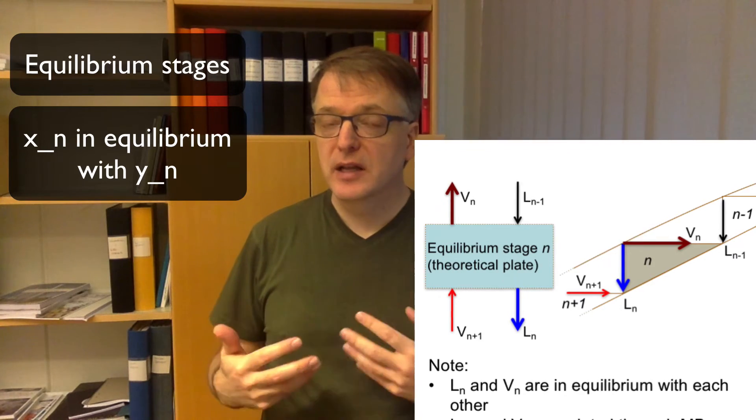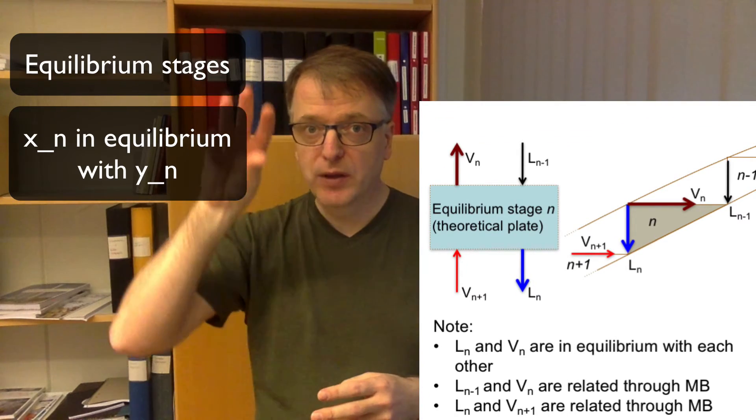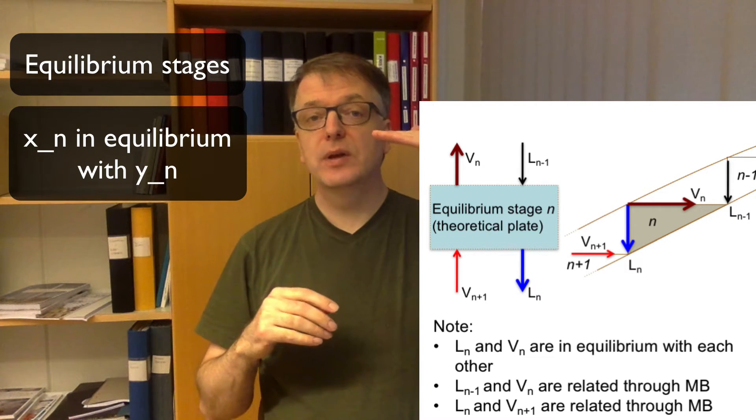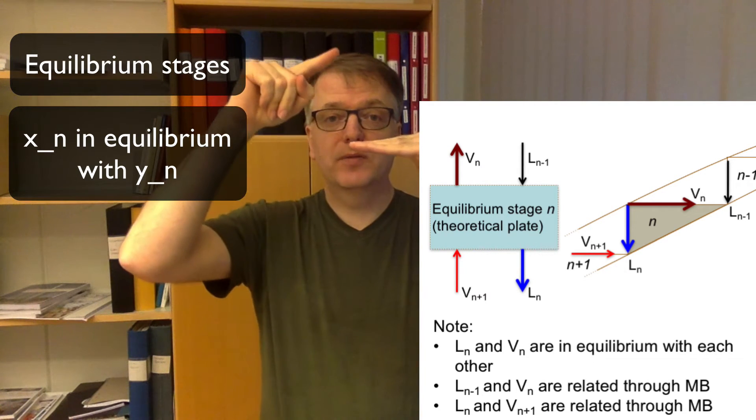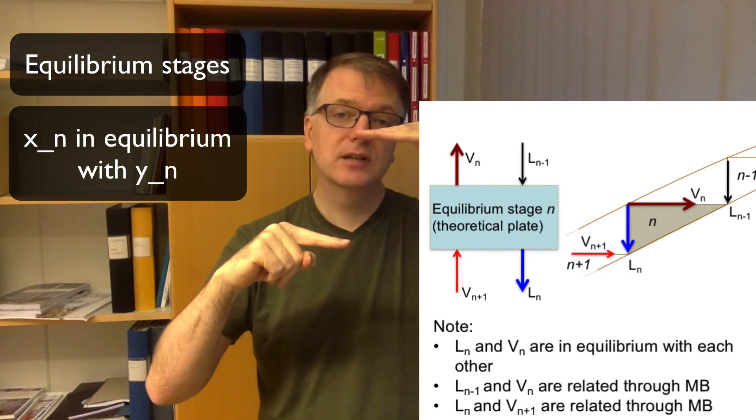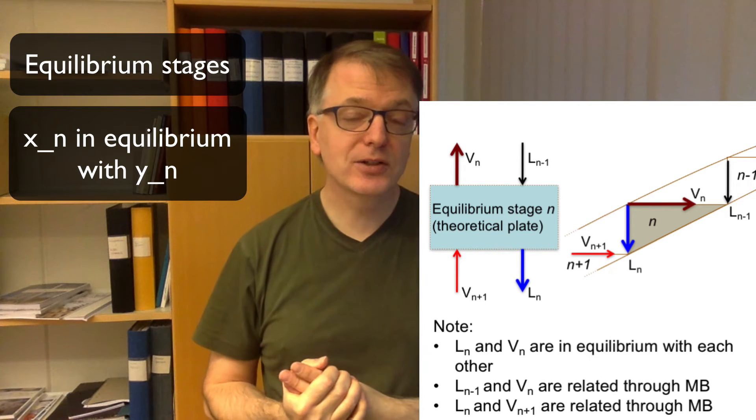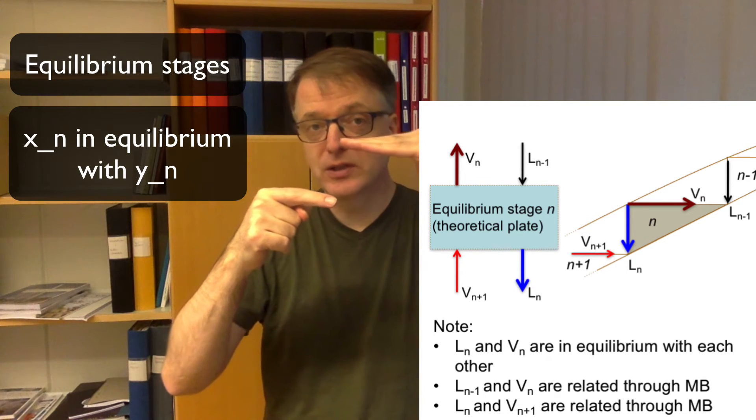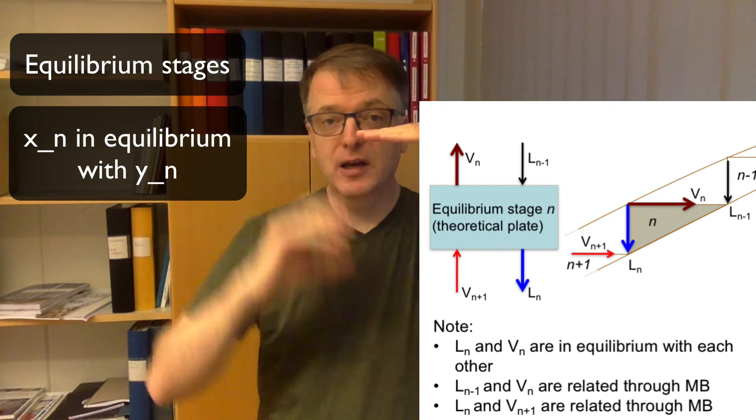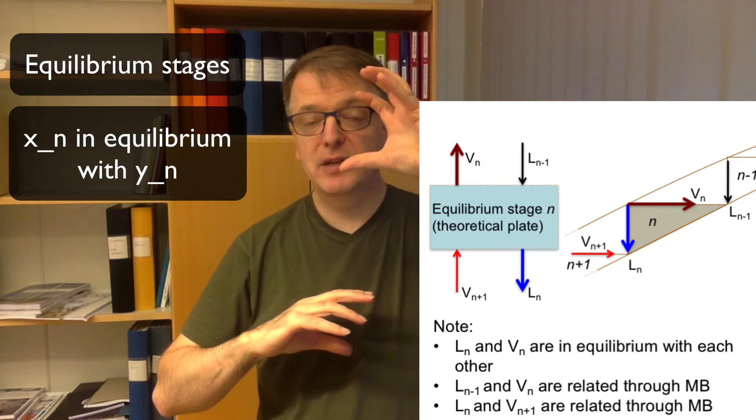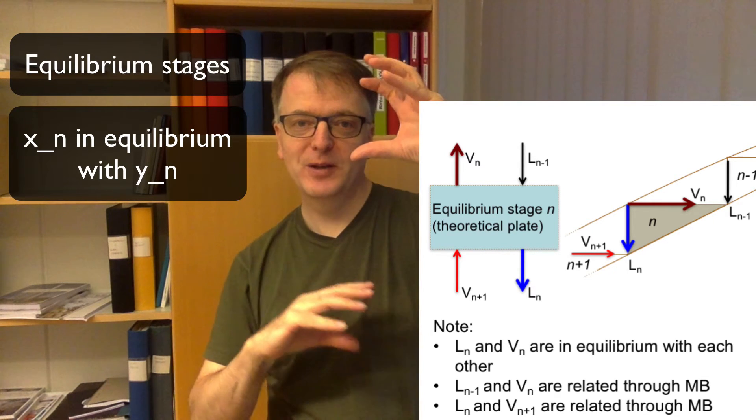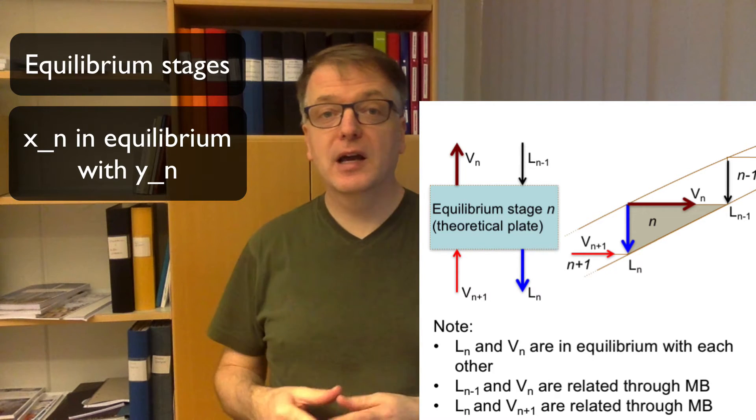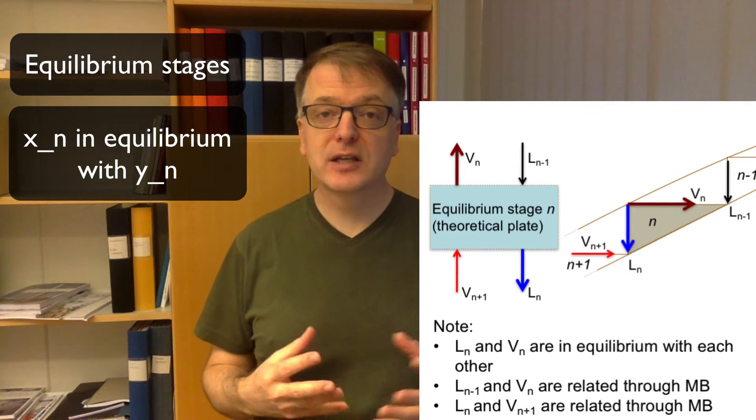You need mass balances and energy balances to calculate your way through the column. On each tray you need an energy balance to keep track of how the liquid fluxes change but actually we have assumed that the liquid fluxes are constant above the feed and below the feed but there might be different above the feed compared to below the feed and then the operating lines become straight lines in an xy diagram.